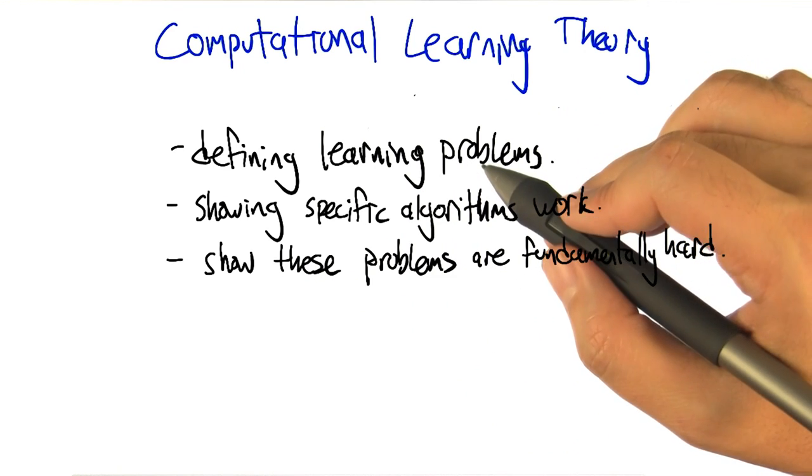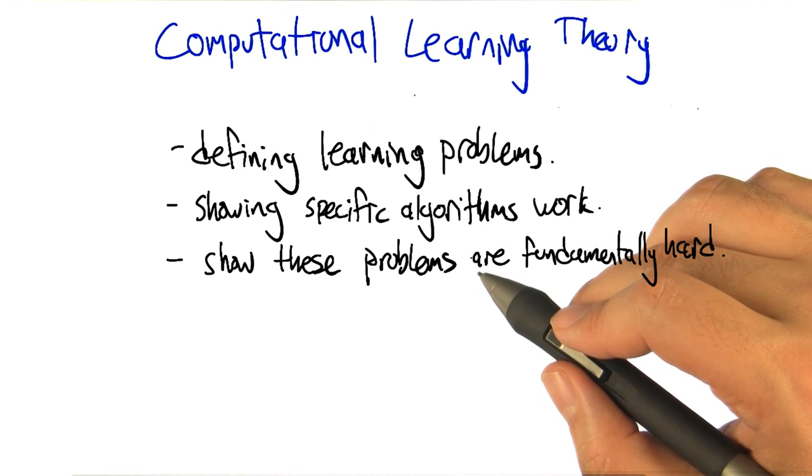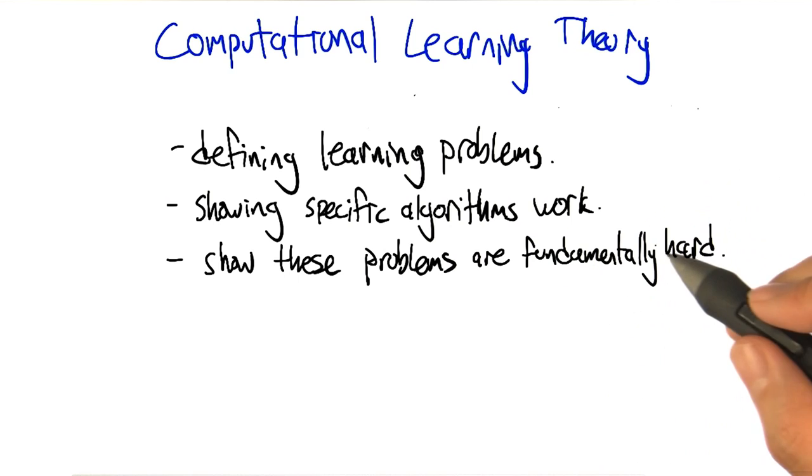So you define a particular learning problem and you discover, wait, the algorithms that I'm thinking of don't seem to work. You might actually be able to show that no algorithms—say no algorithms in some particular class—are ever going to be able to solve them because that problem is not solvable by algorithms in that class. So those problems are fundamentally hard.